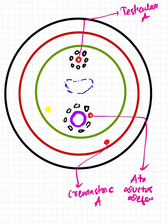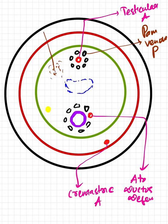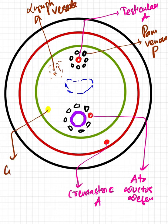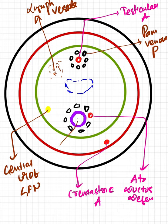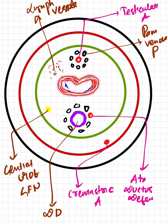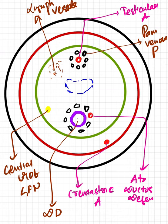The pampiniform venous plexus consists of veins present around the testicular artery. There are also lymphatic vessels, the genital branch of the genitofemoral nerve, the ductus deferens with its artery and veins, the cremasteric vessels, and the processus vaginalis — which is an expansion of the peritoneal cavity.